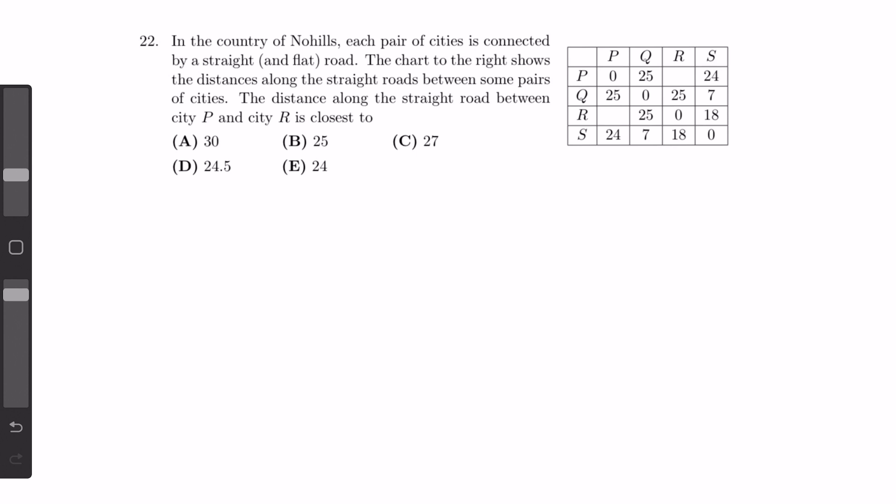The first thing we should notice is that the distance between S and Q is 7, and the distance between S and R is 18, and 7 plus 18 equals 25, which is the distance between Q and R. Therefore, we know that S is somewhere between R and Q.